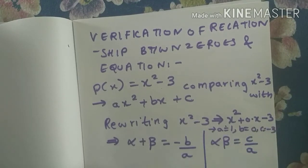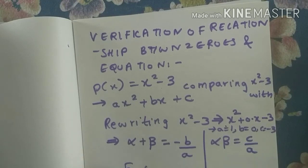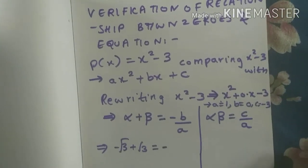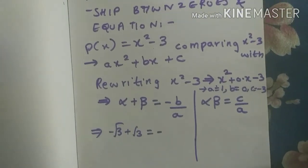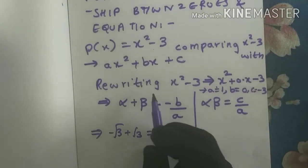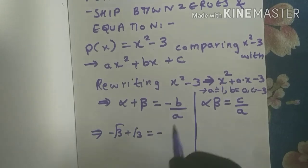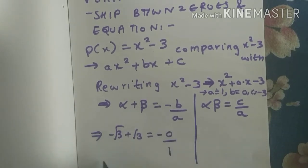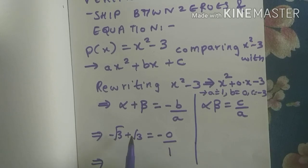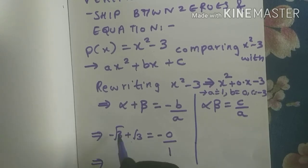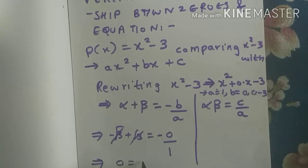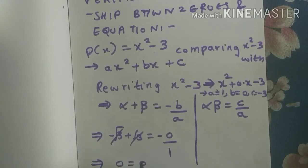Now substituting: alpha plus beta equals minus root 3 plus root 3, and minus b by a equals minus 0 by 1. Since minus root 3 and plus root 3 have opposite signs they cancel, giving 0. And minus 0 by 1 equals 0. So 0 equals 0, meaning LHS equals RHS.